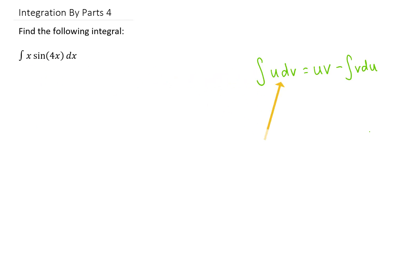Now, when we're using integration by parts, we need to look at the original integral and pick out a u and a dv. Typically, we choose our u to be something that's going to get simpler when we differentiate, so we'll choose u equals x.